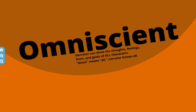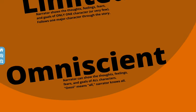Which brings us to our next one: omniscient. 'Omni' here means all, and 'scient' means knowing — we know that from the word science that we use a lot. So omniscient means all-knowing. This is when a narrator can show the thoughts, feelings, fears, and goals of all characters. And remember, omni means all — that'll be your big clue here.